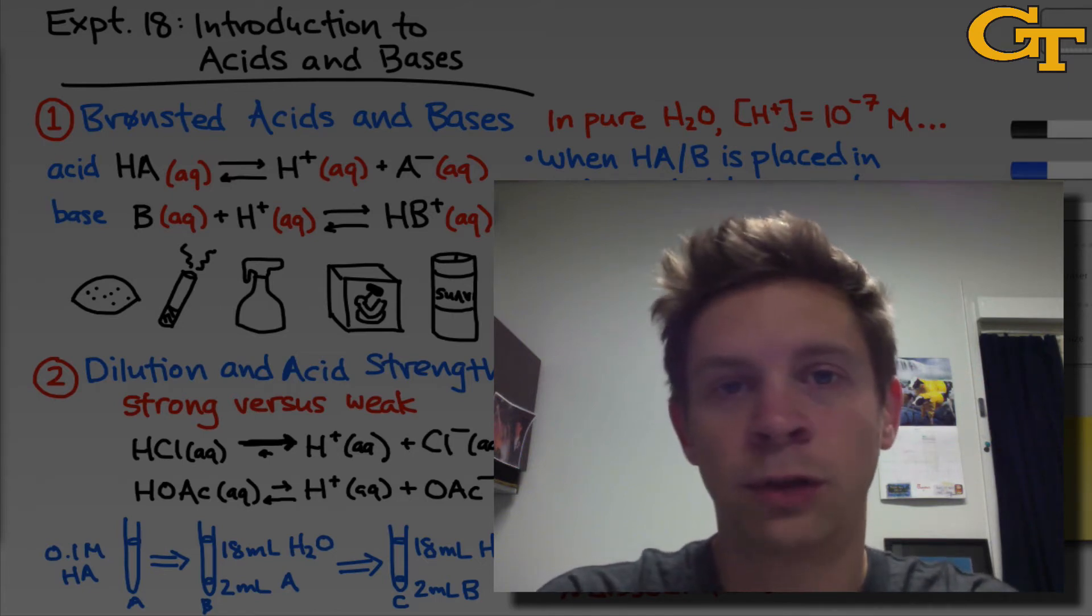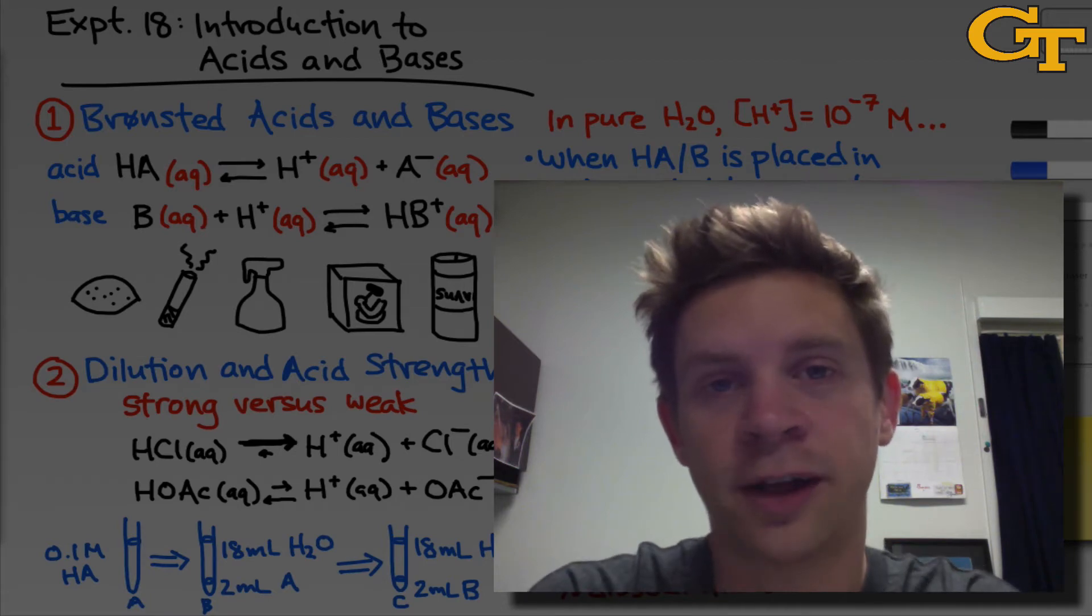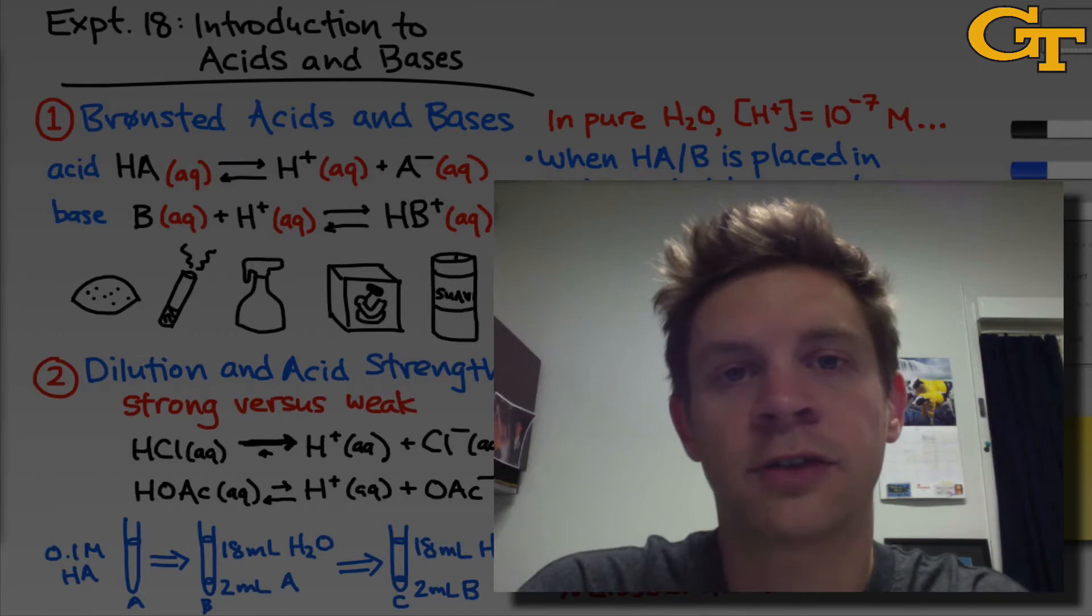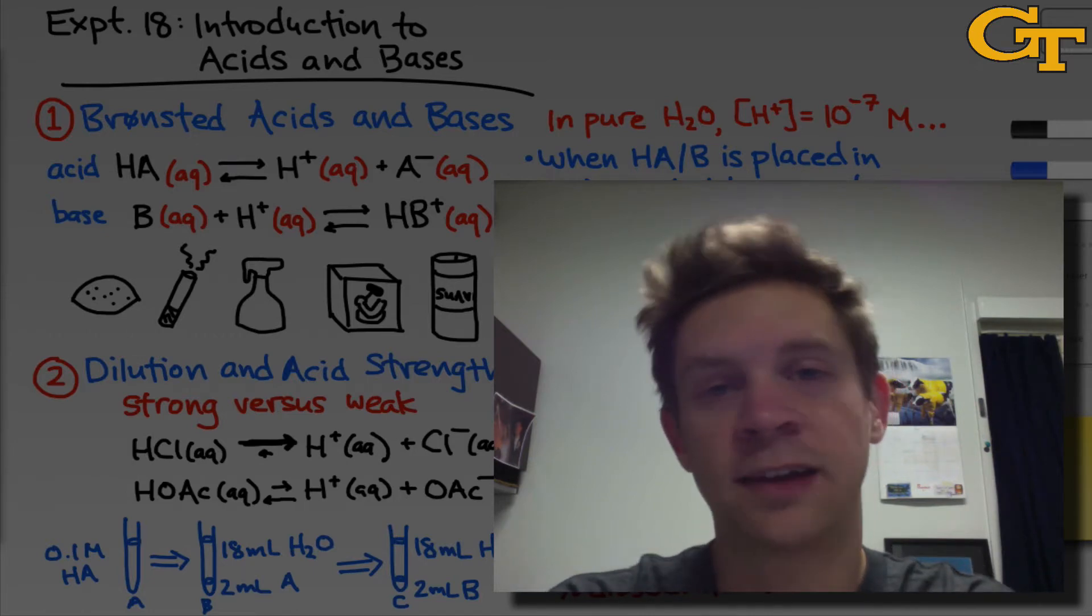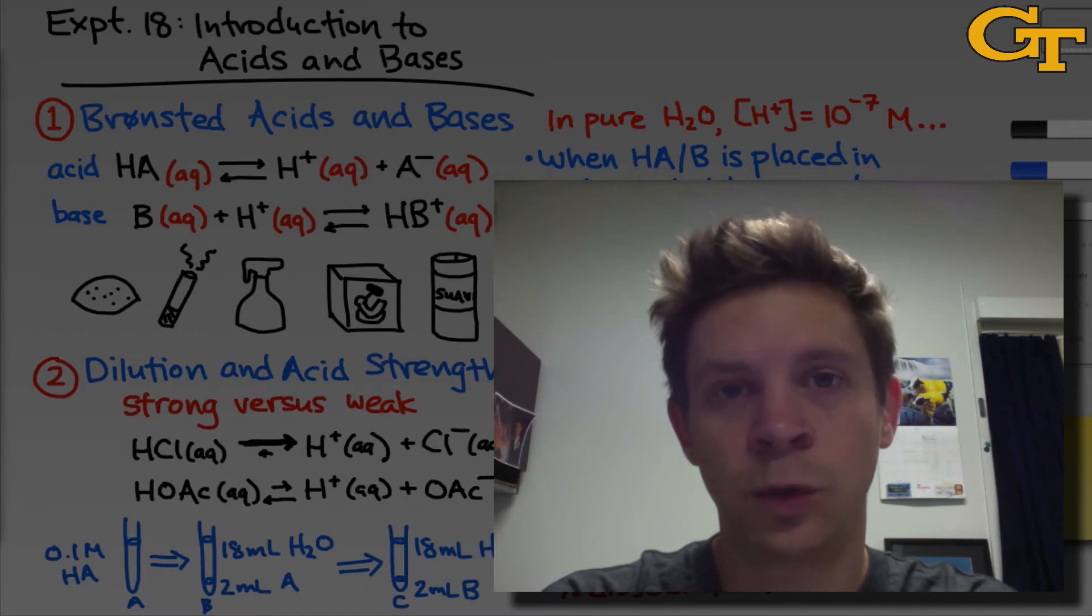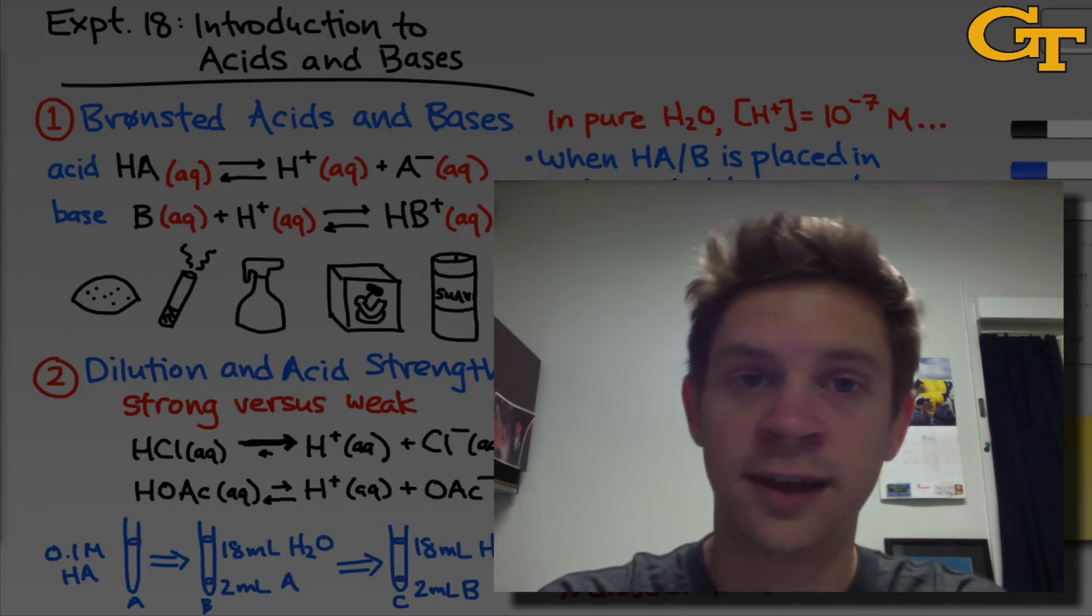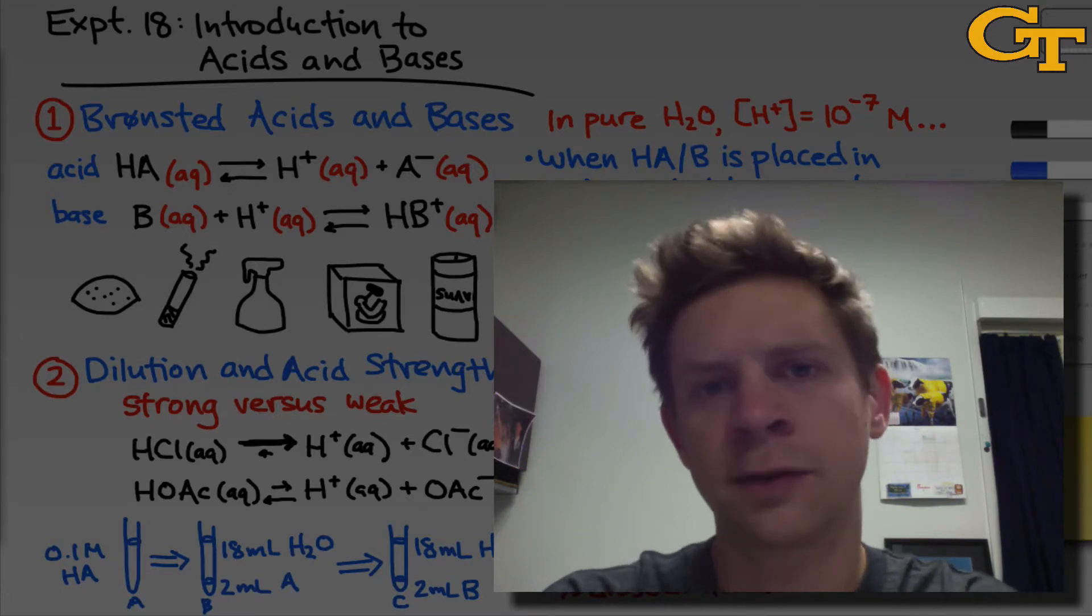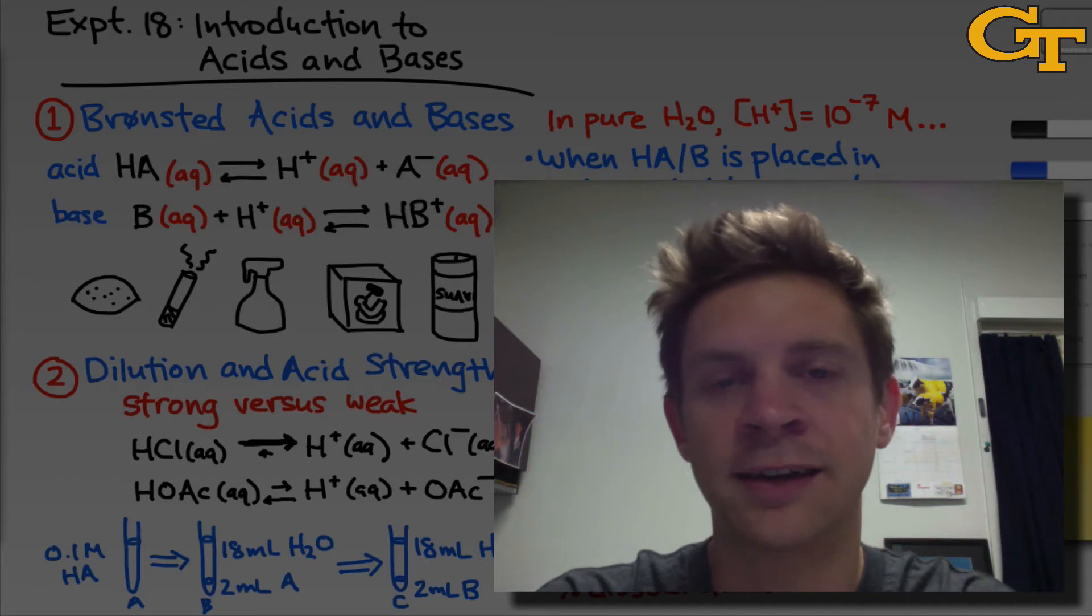In the first part of the experiment, we'll investigate the pH of common household products. In the rest of the experiment, we'll look at the effect of dilution on pH, and then we'll investigate pH indicators, which are weak acids whose acidic and basic forms have different colors.